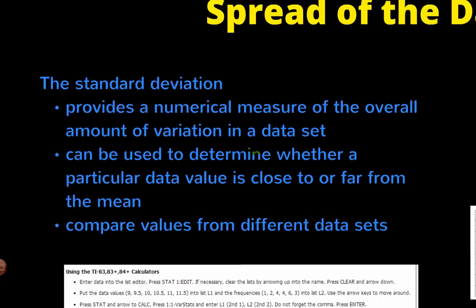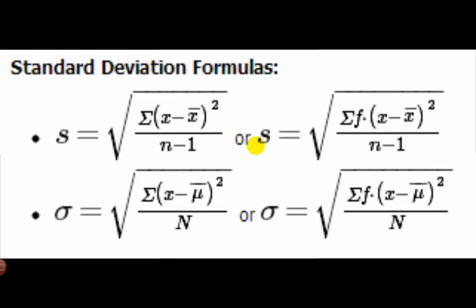Standard deviation allows us to compare values from one data set to another — for example, looking year to year to see if spreads are different even when the means are the same. The formula is the square root of the sum of (x minus x-bar) squared, divided by n minus 1, since we're most likely looking at a sample. If working with a population, divide by n instead, but in most cases we're dealing with the sample standard deviation s.